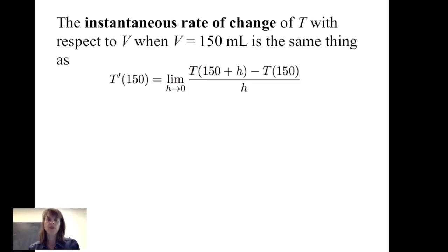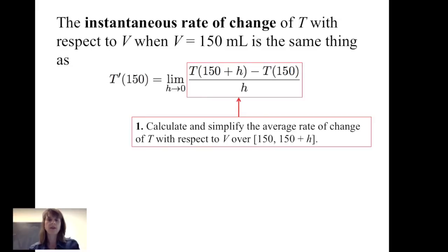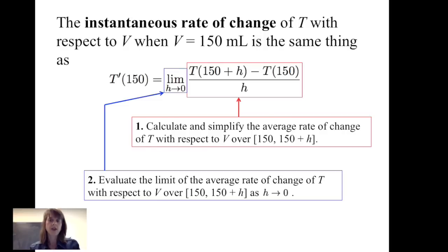The instantaneous rate of change of time with respect to volume when volume equals 150 milliliters is the same as the derivative of t with respect to v evaluated at 150, which is the limit of t(150+h) minus t(150), all divided by h, as h goes to 0. So first we calculate and simplify the average rate of change over the closed interval from 150 to 150 plus h, then take the limit as h goes to 0.